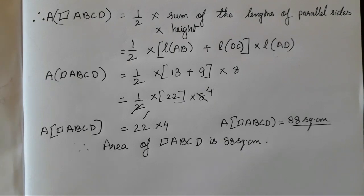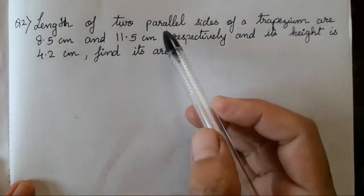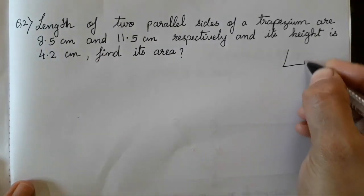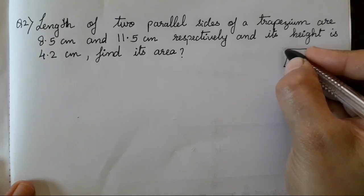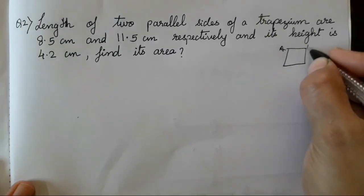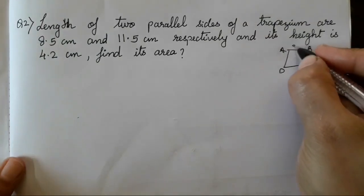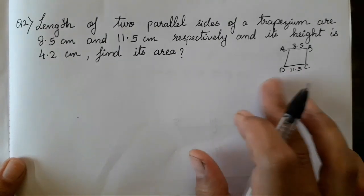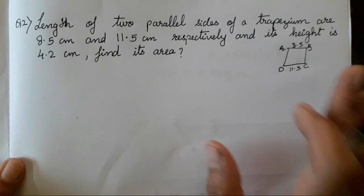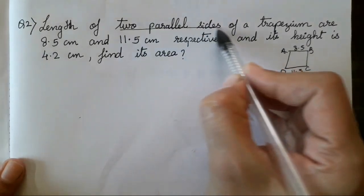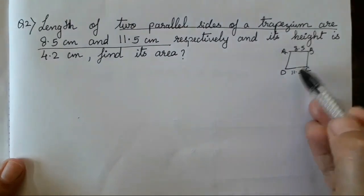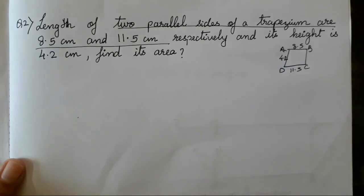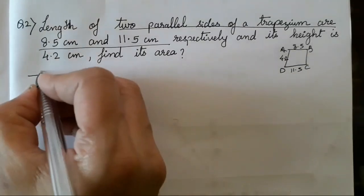I hope you all have understood the first sum. Let's do the second one now. The length of the two parallel sides of a trapezium are 8.5 and 11.5. This is a rough figure — you all can draw a fair figure also. The parallel sides of the trapezium are marked and its height is 4.2 cm. Find the area.